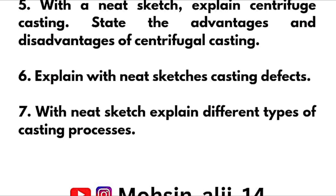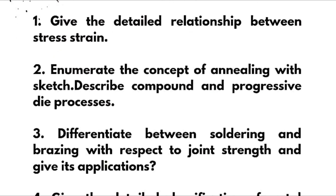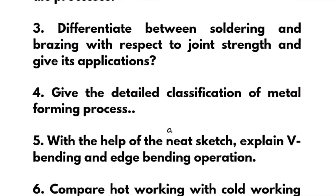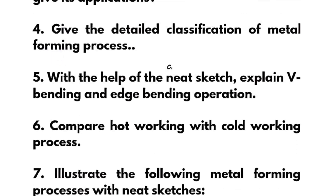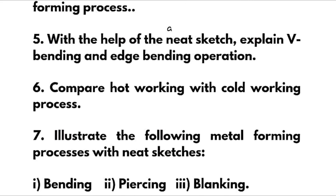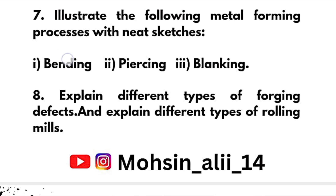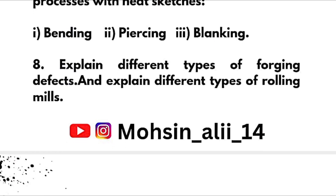In Module 3, we have: give the detailed relationship between stress and strain; enumerate the concept of annealing with a sketch; describe compound and progressive die processes; differentiate between soldering and brazing with respect to joint strength and give their applications; give the detailed classification of metal forming processes; explain V-bending and edge bending operations with neat sketches; compare hot working with cold working processes; and illustrate metal forming processes like bending, piercing, and blanking with neat sketches.